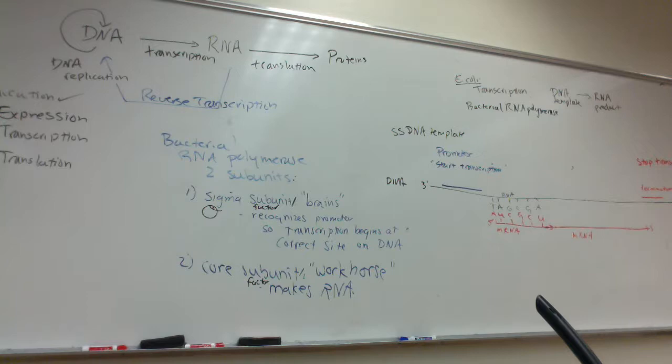Polycistronic mRNA just means mRNA that has information for two or more proteins. When we come back to control of gene expression, this will become more important. Can eukaryotes make polycistronic mRNA? No — we can only make monocystronic mRNA, where each mRNA only carries information for one protein.